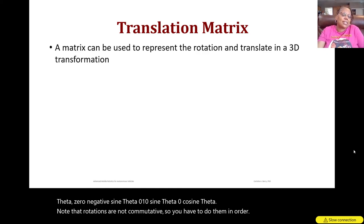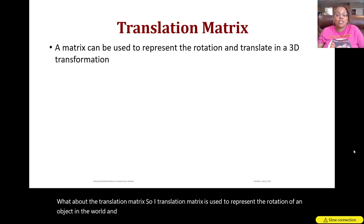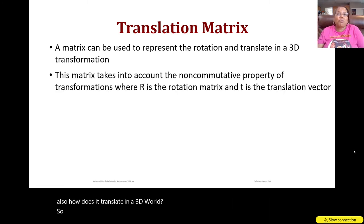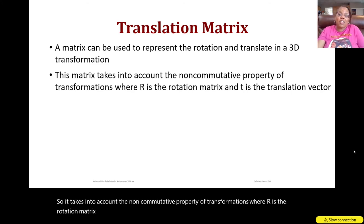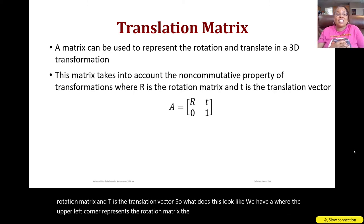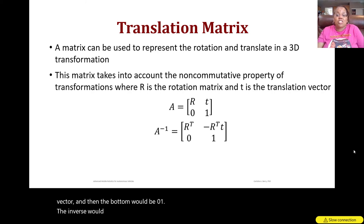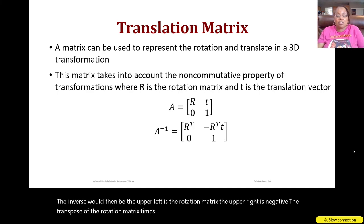A transformation matrix represents both the rotation and translation of an object in 3D, taking into account the non-commutative property of transformations, where R is the rotation matrix and t is the translation vector. The transformation matrix A has the rotation matrix in the upper left, the translation vector in the upper right, and [0, 1] along the bottom. Its inverse has the rotation matrix in the upper left, −R^T · t in the upper right, and [0, 1] along the bottom.